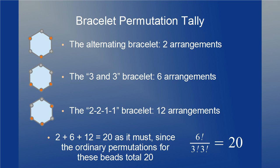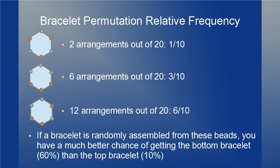Let's tally up all the bracelets. We have the alternating bracelet with 2 arrangements, the 3-in-3 bracelet with 6 arrangements, and the 2-2-1-1 bracelet with 12 arrangements. 2 plus 6 plus 12 equals 20, as it must since the ordinary permutations for the beads equals 20. Now let's look at relative frequencies. When randomly assembling bracelets, the 3 bracelets themselves are not equally likely, but the underlying fixed arrangements are, so we need to weight them accordingly. We have 2 out of 20 arrangements giving the alternating bracelet (1/10), 6 out of 20 for the 3-in-3 bracelet (3/10), and 12 out of 20 for the 2-2-1-1 bracelet (6/10).